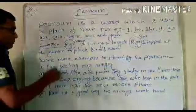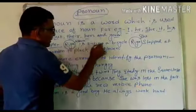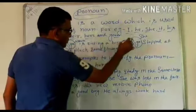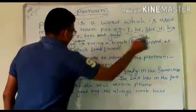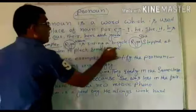So if you want to replace the noun, Riya is riding a bicycle — she stopped at the garden to pluck some flowers.